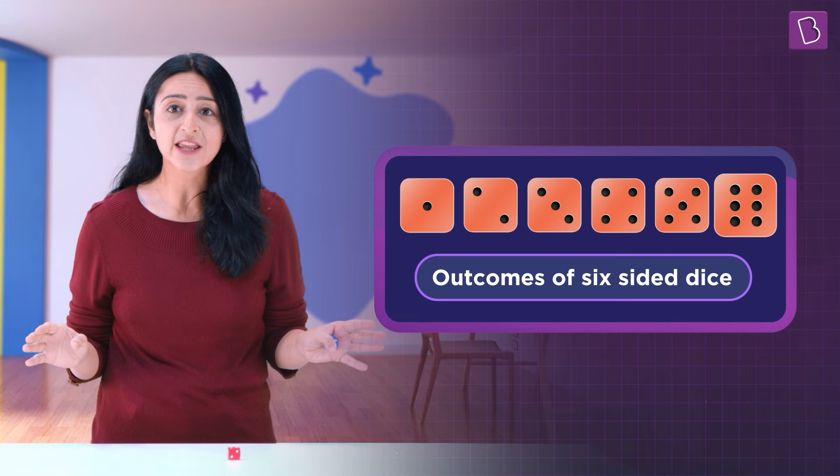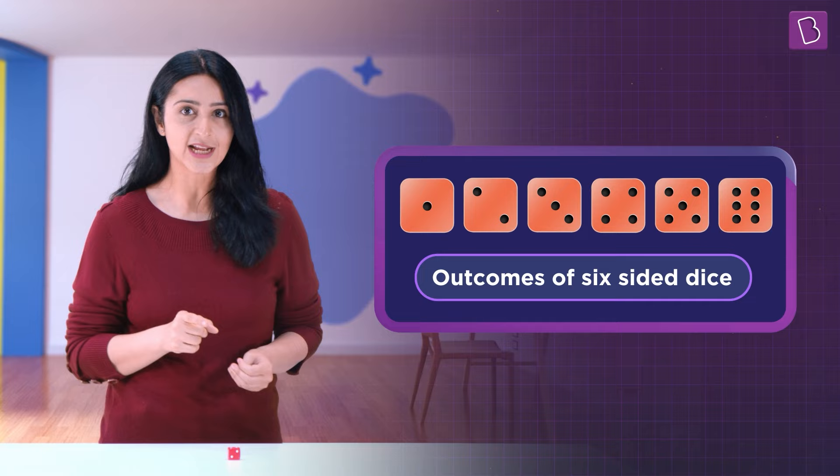When we roll a six-sided dice, it will randomly give us any one of its six numbers. These are the outcomes of the event of rolling a dice, and together they comprise the sample space of a dice roll.